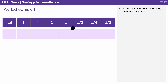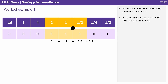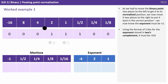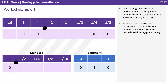Let's store 3.5 first as a normalised floating point binary number. First write out 3.5 on a standard fixed point number line. Next, move the binary point so it sits between the first 0 and 1 — normalised positive numbers must start 01. We've moved it two places to the left. As we moved it two places to the left, we need the exponent to be plus 2. In three bits of exponent in two's complement, that's stored as 010. The mantissa is simply the number from the original number line, remembering it must start 01. We now have the correct representation of 3.5 in normalised floating point binary.